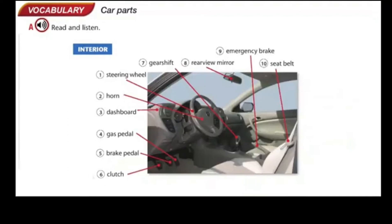Interior: 1. Steering wheel. 2. Horn. 3. Dashboard. 4. Gas pedal. 5. Brake pedal. 6. Clutch. 7. Gear shift. 8. Rear view mirror. 9. Emergency brake. 10. Seat belt.